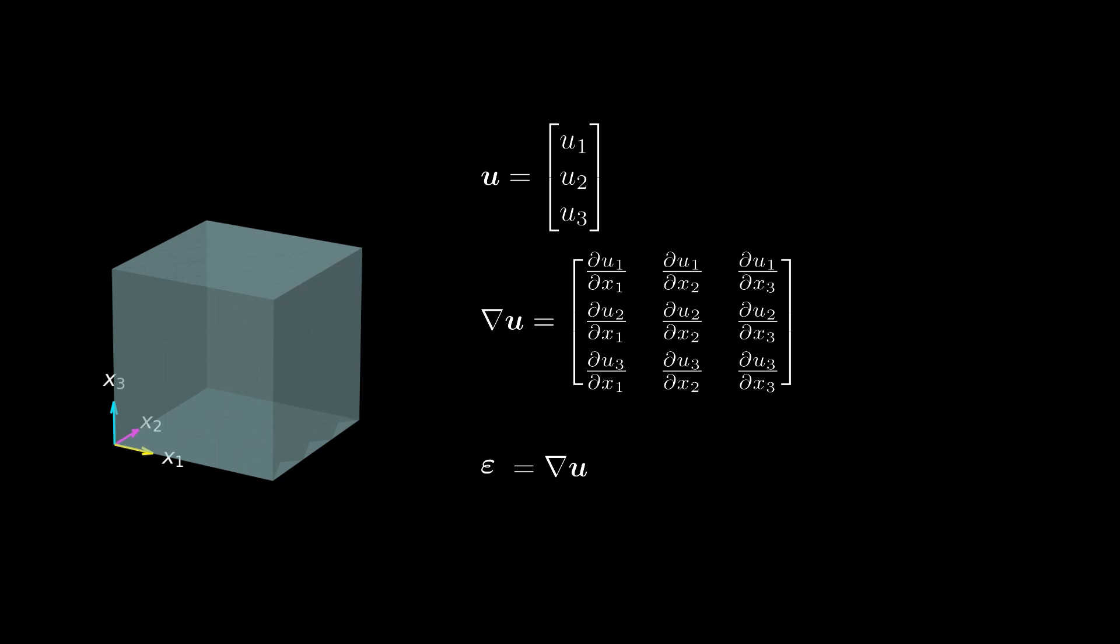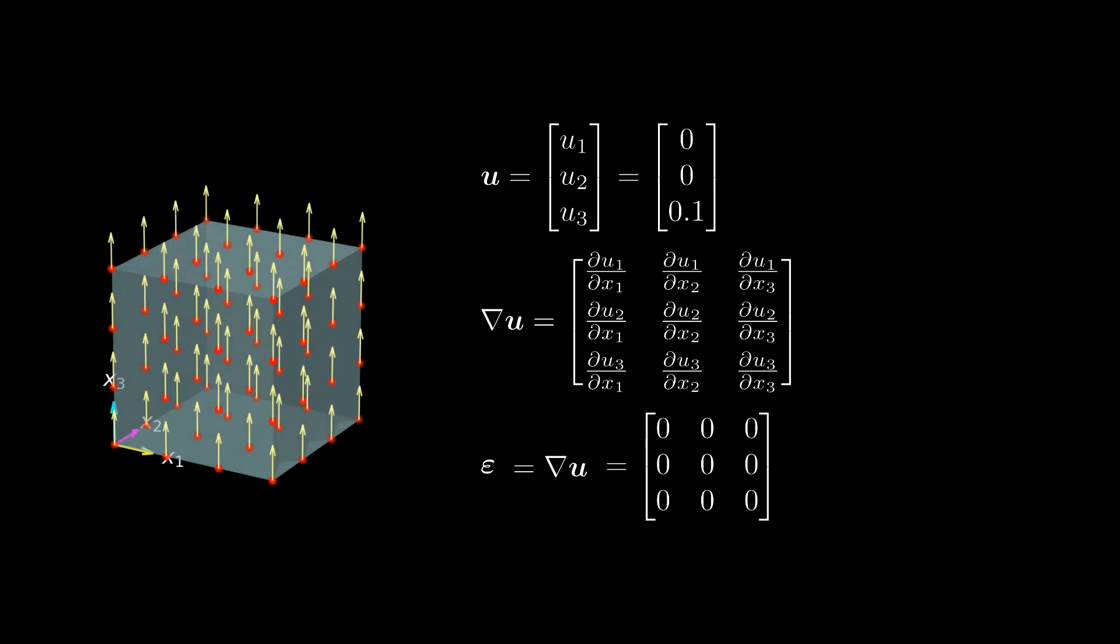Let's take a look at the previous displacement field examples. In the case of rigid body translation, the displacement gradient is zero. Great, this is what we wanted. The matter is translating in space, but it is not deforming and the strain is zero.